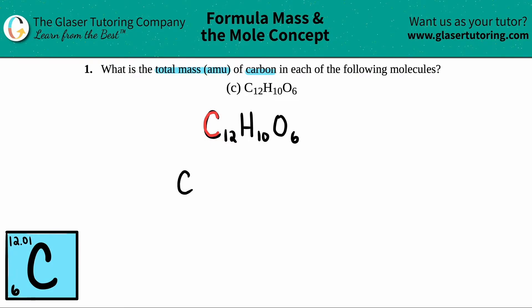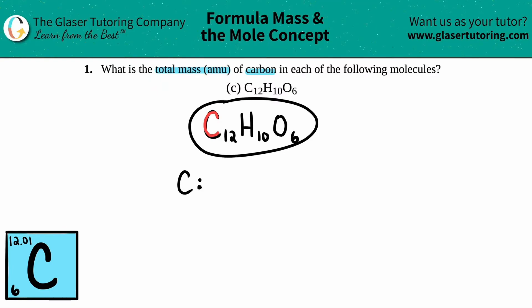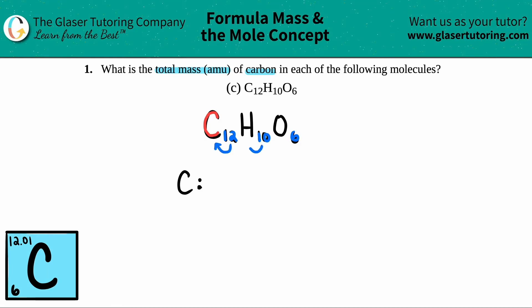Now, in order to find the total mass of the element, the first thing we have to figure out is how many of my element are in my compound. Well, I have a C and right next to it I have this 12. You see how there are numbers right after every single element? That tells you how many you have of that element. In this case, we only care about the carbon. So how many total carbons do I have? I have 12.